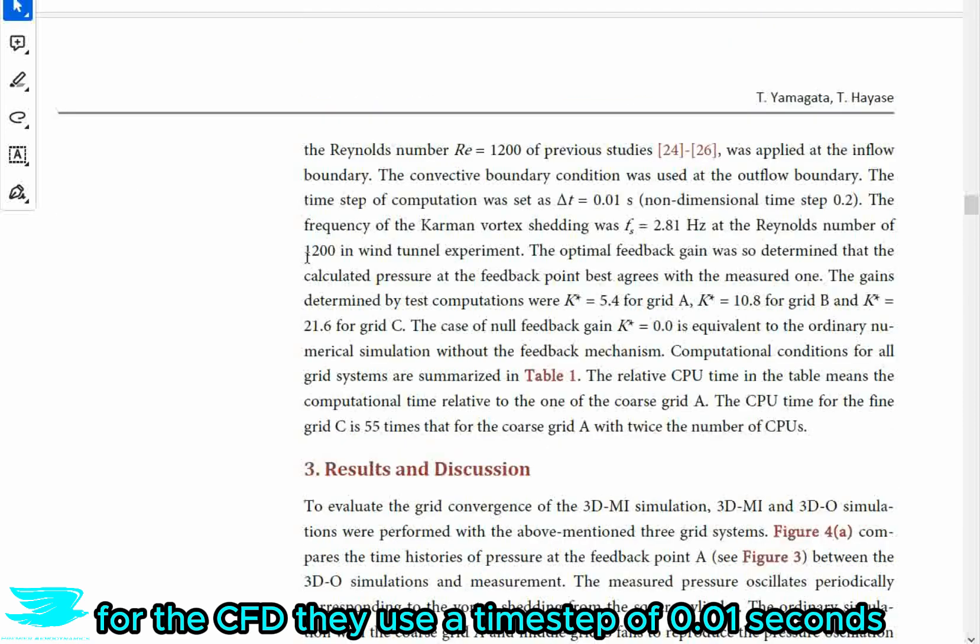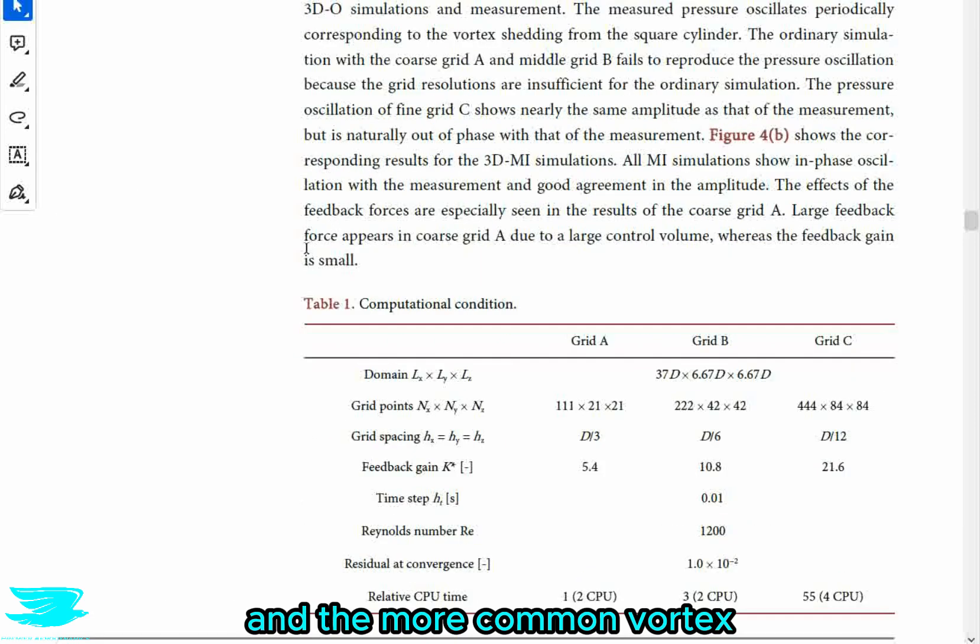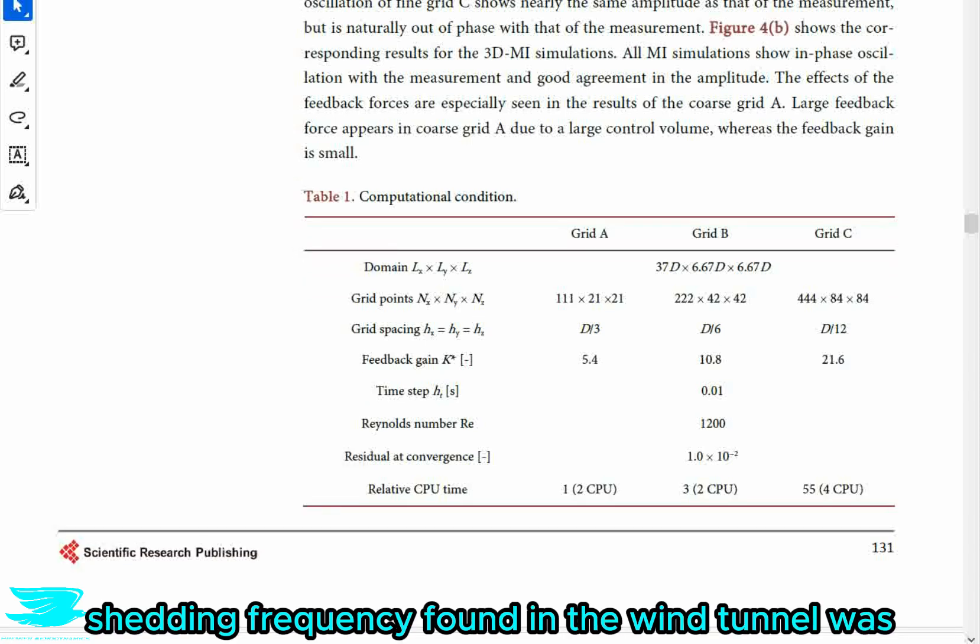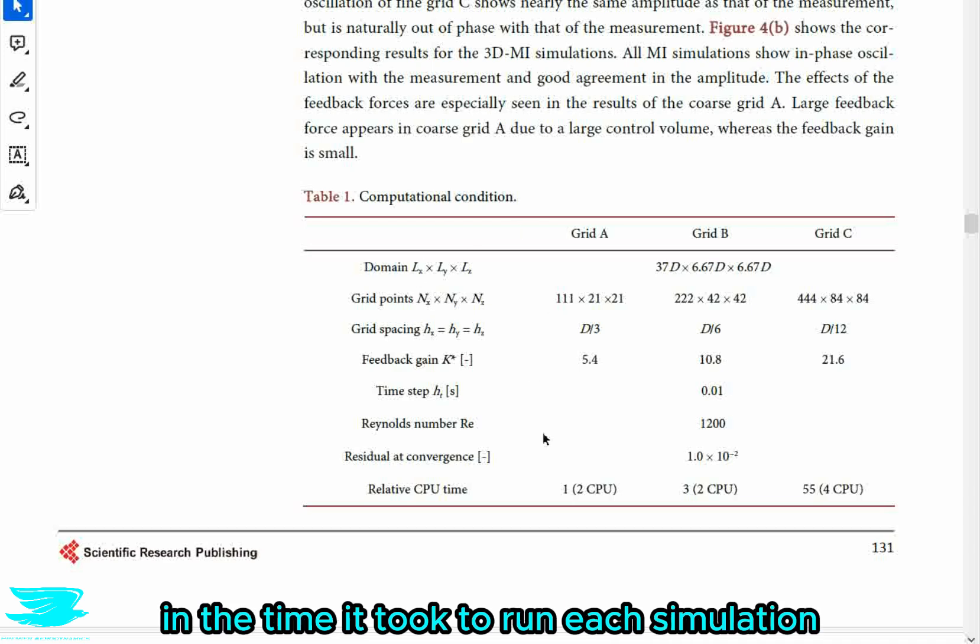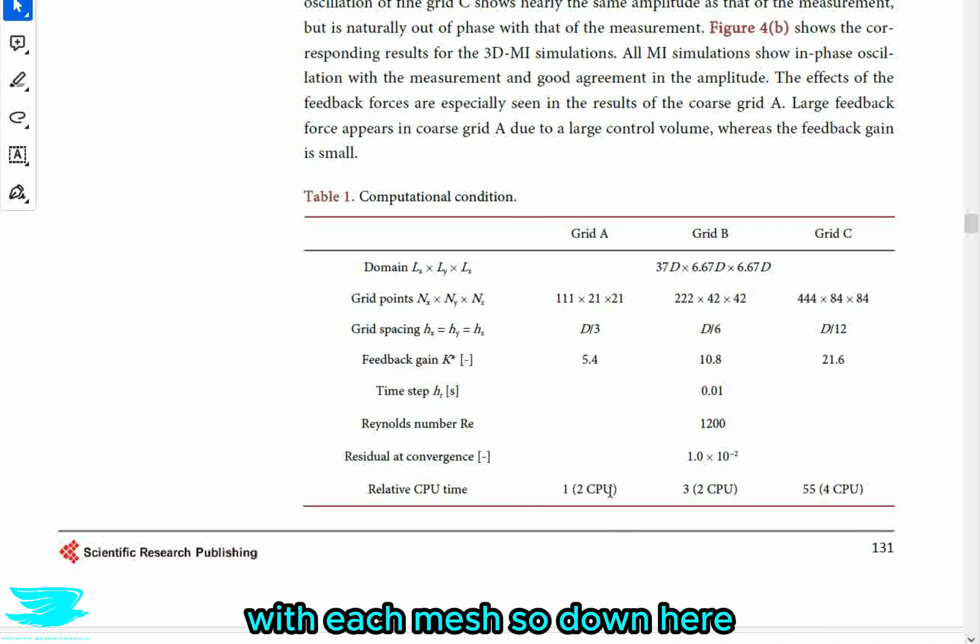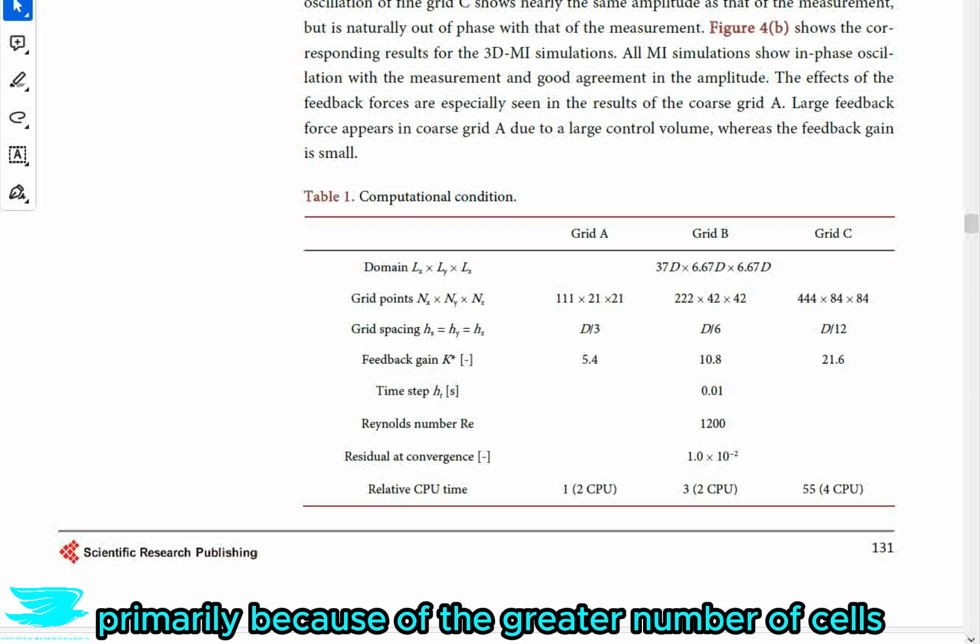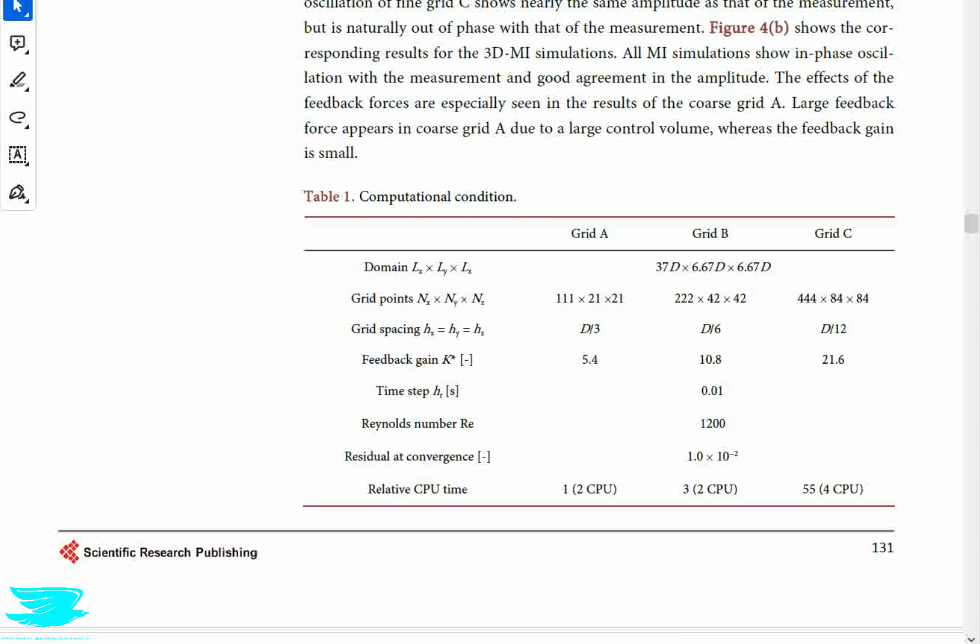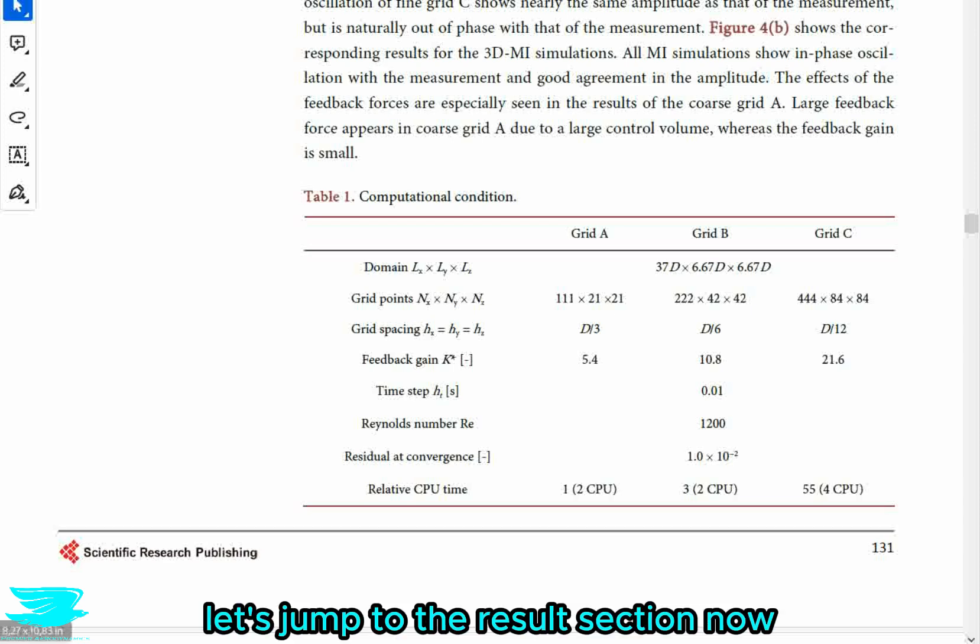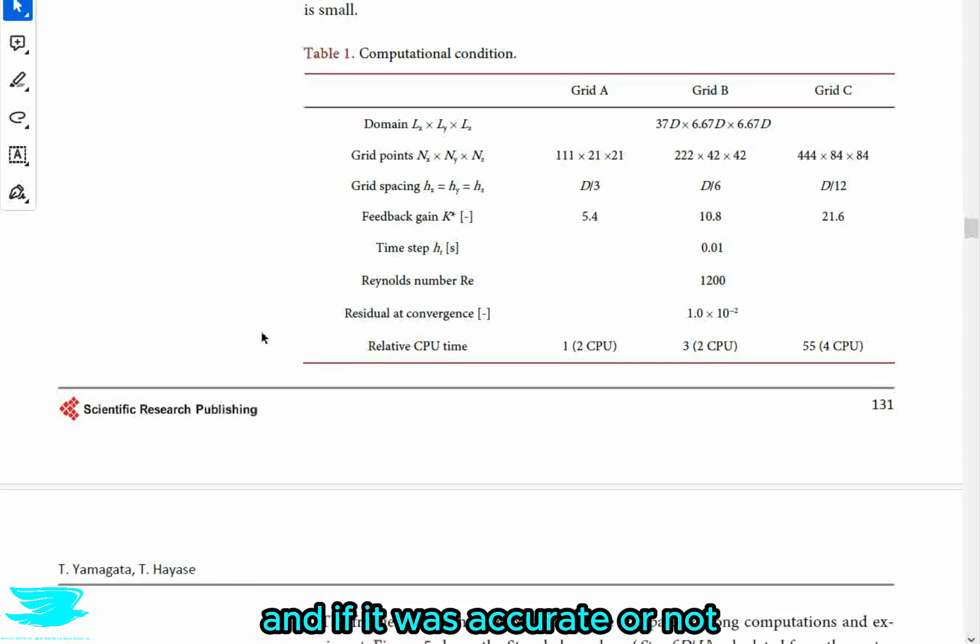For the CFD, they use a timestamp of 0.01 seconds. And the von Karman vortex shedding frequency found in the wind tunnel was 2.81 hertz. In table one, they show the difference in the time it took to run each simulation with each mesh. And the finest mesh took over 100 times longer to run than the coarsest mesh. And that is primarily because of the grand number of cells and also because they used more cores, which reduced efficiency.